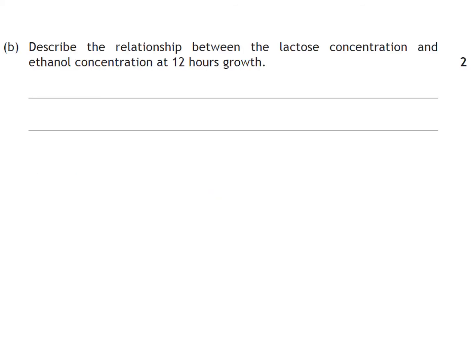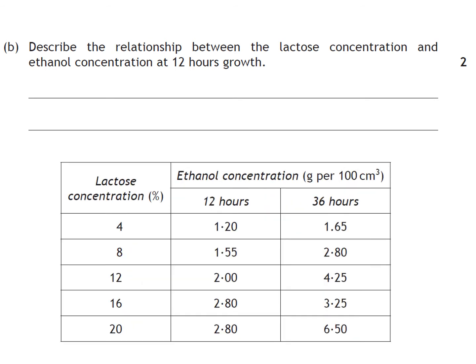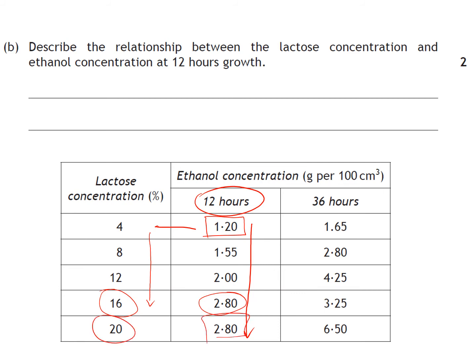Describe the relationship between the lactose concentration and the ethanol concentration at 12 hours of growth. Treat this like one of the graph questions from the data handling. At 4% we have 1.2 grams per 100 cm³ being produced; it then increases until it gets to 16% lactose concentration, where it reaches 2.8 grams per 100 cm³, and then remains the same even though you increase the lactose concentration. That covers all the marks.